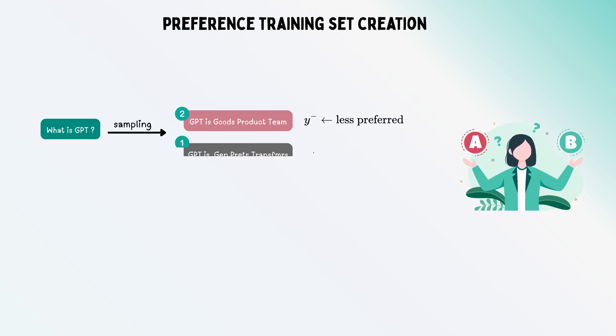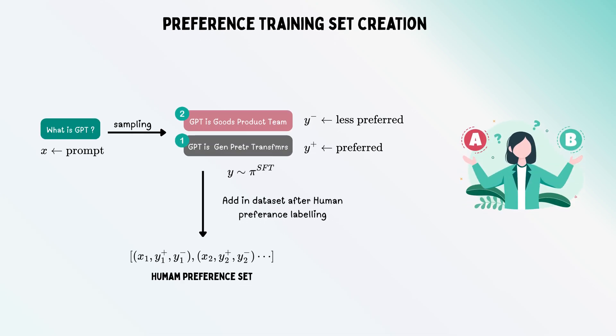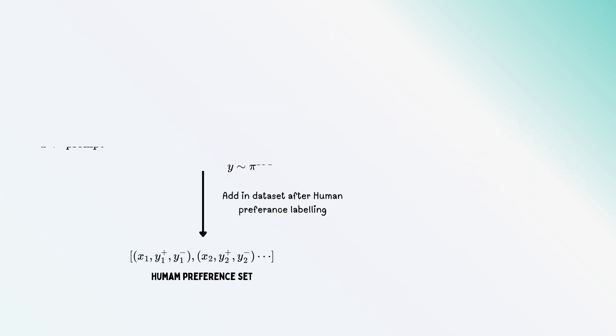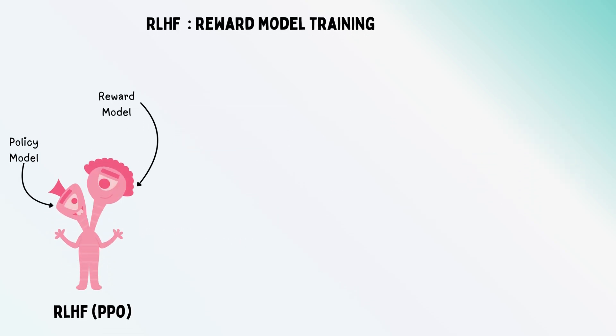Now that we have pairs of input and multiple responses, we can use RLHF to figure out which response is preferred by humans. The first step in RLHF is reward model training.